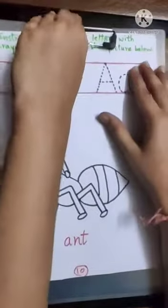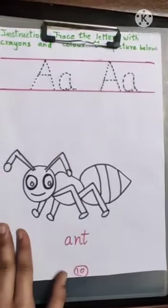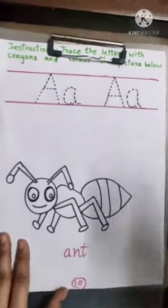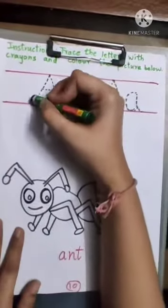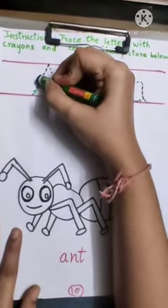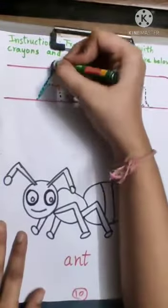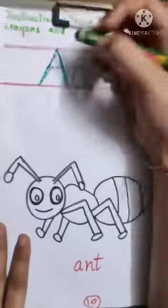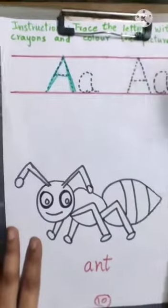So first take a crayon and trace the letters. First we are going to trace capital A. For that make a slanting line, then another slanting line and a sleeping line.